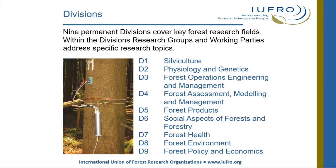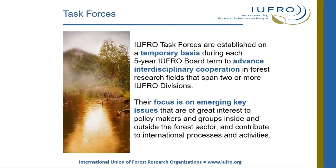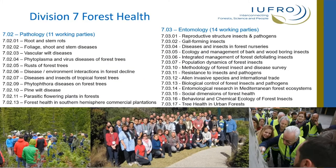Research groups each contain working parties that are focused on more specific subject matter. Another major component of IUFRO structure is task forces — temporary interdisciplinary teams focused on specific emerging topics. Division 7 has two research groups, forest pathology and forest entomology, with 11 and 14 working parties respectively. Working parties are the active heart of IUFRO, as these groups get together regularly for meetings focused on their areas of study.